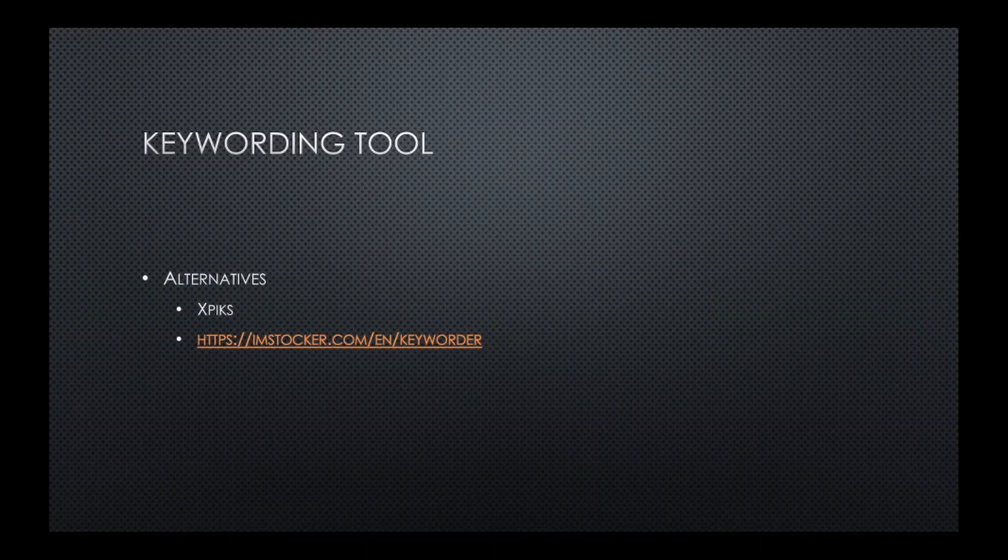With Shutterstock, another thing I really like is there are keywording tools available right on the upload site. Adobe has some suggestions, but the interface is not as good. Shutterstock has a really good one where you can search with keywords across several photos - you pick three photos and then pick from a bunch of keywords that show up for those photos, so you can quickly click on them instead of trying to come up with 50 keywords yourself. For Adobe Stock, an alternative is to use Xpix or IamStalker.com - there are ways of generating keywords, but it's really nice that Shutterstock has that built in.